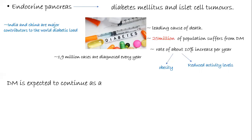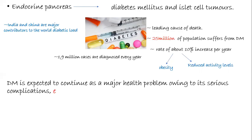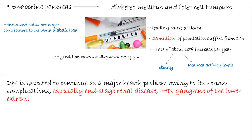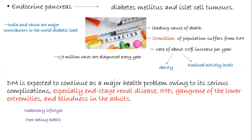Diabetes mellitus is expected to continue as a major health problem owing to serious complications like end-stage renal disease, ischemic heart disease, gangrene of the lower extremities, and blindness in adults. The two factors contributing to diabetes are sedentary lifestyle and poor eating habits, which cause obesity, ultimately leading to escalation of diabetes — this is called the diabetes epidemic.